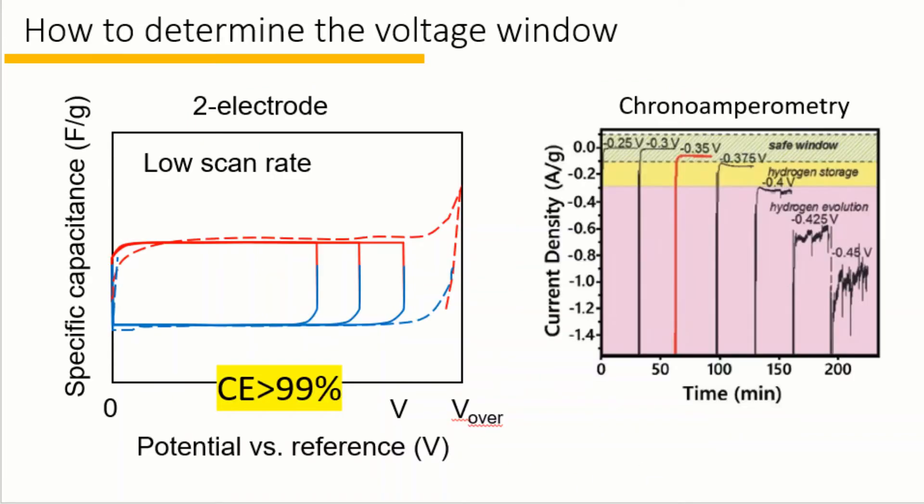The second question is how to determine the voltage window. If we are using cyclic voltammetry, we can cycle the device on a low scan rate, usually 2-5 mV per second for a supercapacitor, while increasing the operating potential window in about 0.2 volt increment and calculating the Coulombic efficiency. The Coulombic efficiency should be larger than 99% for an effective supercapacitor.